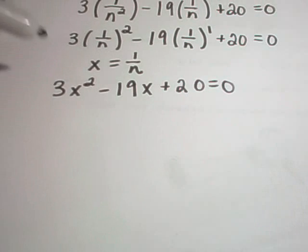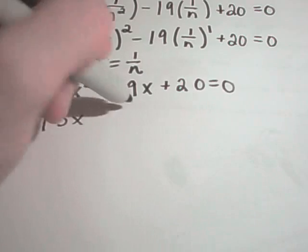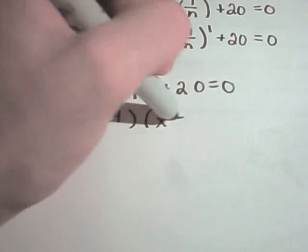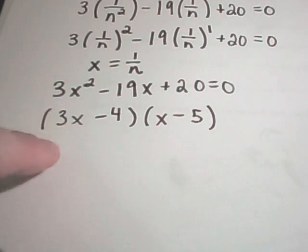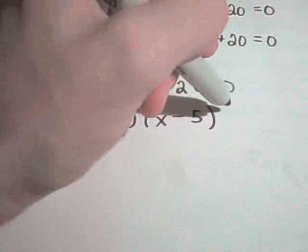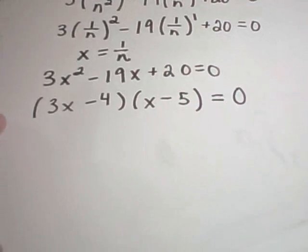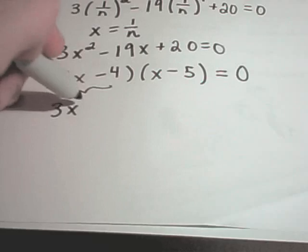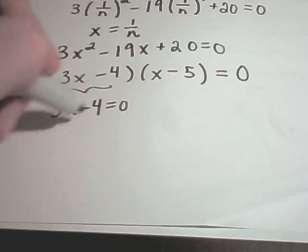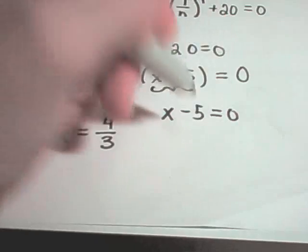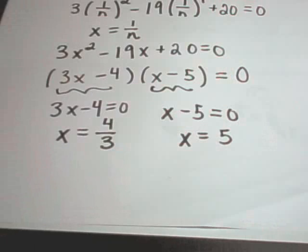Now it looks like a quadratic equation, and I believe this is going to factor. If we put (3x minus 4)(x minus 5), multiplying out gives 3x squared, minus 15x, minus 4x — which is negative 19x — plus 20 equals 0. Setting each factor equal to zero: 3x minus 4 equals 0, so adding 4 and dividing by 3 gives x equals 4/3. From the other factor, x minus 5 equals 0, so x equals 5.